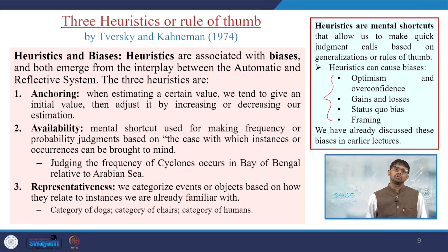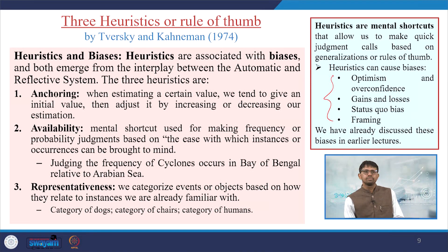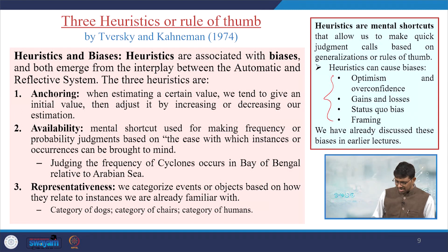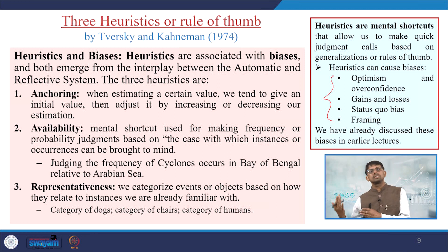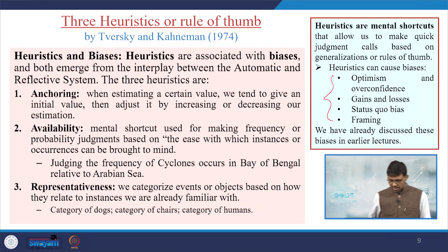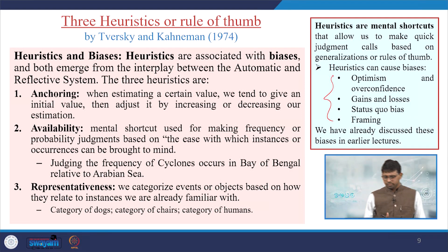Another heuristic is representativeness. We categorize events or objects based on how they relate to instances we are already familiar with — such as categories of dogs, categories of chairs, or categories of humans. Some representations have already been made, and hence we tend to be biased towards those and simply view as if a representative one is being discussed.